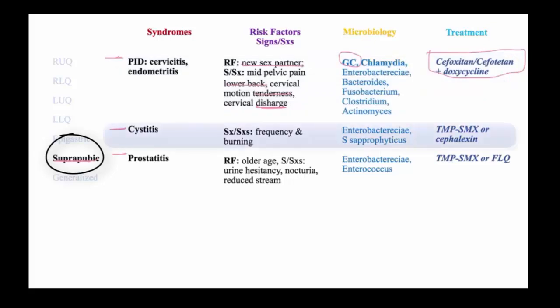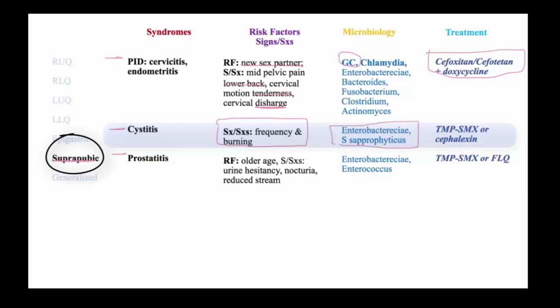In the case of cystitis, this is a lower urinary tract infection manifesting as frequency and burning, usually caused by Enterobacteriaceae and the coagulase-negative Staph saprophyticus. This may be treated with Bactrim or a first-generation cephalosporin.